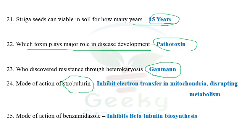Strobilurin group fungicides inhibit electron transfer in mitochondria and disrupt metabolism. Definitely at least one or two questions about modes of action will be asked in the NET exam. If you go through strobilurin, benzimidazole, or carbamates, you can answer those. I have collected seven to eight NET question papers and after finishing all of them, I am planning to prepare some last-minute preparation material for the national eligibility test covering specific areas that are commonly tested.